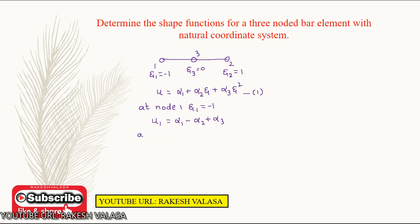Similarly, at node 2, zeta 2 equals plus 1. The displacement at node 2 gives u2 equal to alpha 1 plus alpha 2 plus alpha 3. At node 3, substituting zeta 3 equal to 0 into equation 1, we get u3 equal to alpha 1, since the remaining two terms become zero.